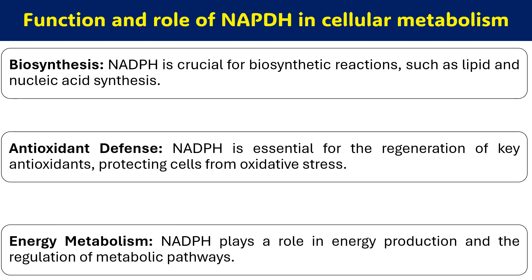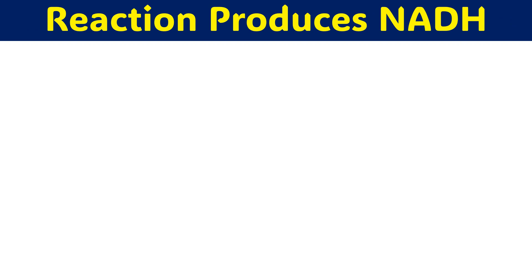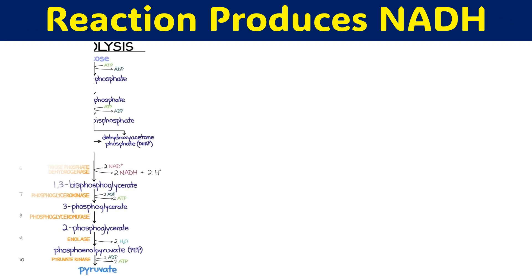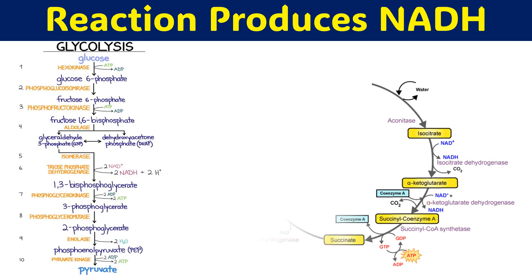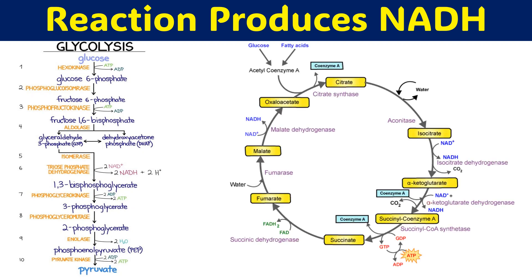NADPH is also involved in many cellular processes. There are many reactions that generate NADH from NAD+, but two important processes are glycolysis and the Krebs cycle.